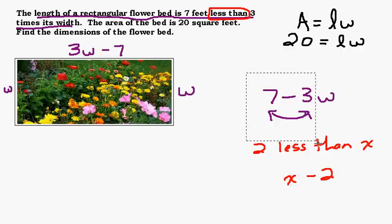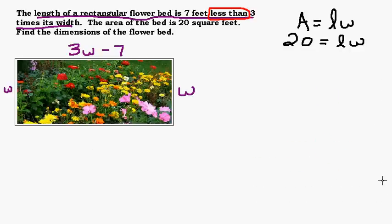Okay, let's get rid of this stuff here and continue solving our problem. Alright, so now we know that the bottom is also 3 times the width and 7 less than that. Now we look at our formula. 20 equals the length times the width. We know that this width times this length is going to equal 20. So we know that 20 is going to equal w times 3w minus 7.